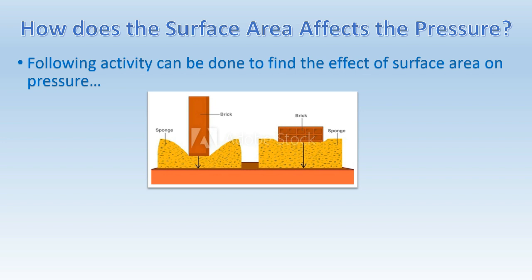The only thing that you have to do is to place the different faces of the brick on the sponge and observe how it shrinks. Now you will observe that when you place the faces with larger surface area on the sponge, the sponge shrinks a little. And when you place the face with lower surface area on the sponge it shrinks more.